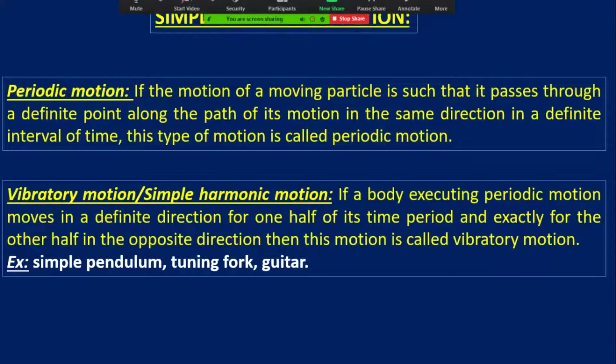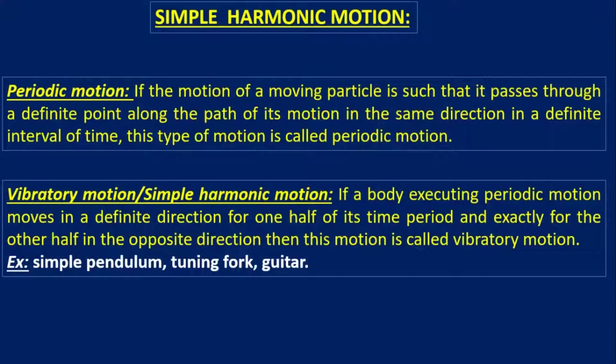Now I am going to start today's class. Before starting simple harmonic motion, you have to know what is periodic motion. Periodic motion is one type of motion where a particle moves from a definite point along the path of its motion in the same direction in a definite interval of time. This type of motion is called periodic motion.